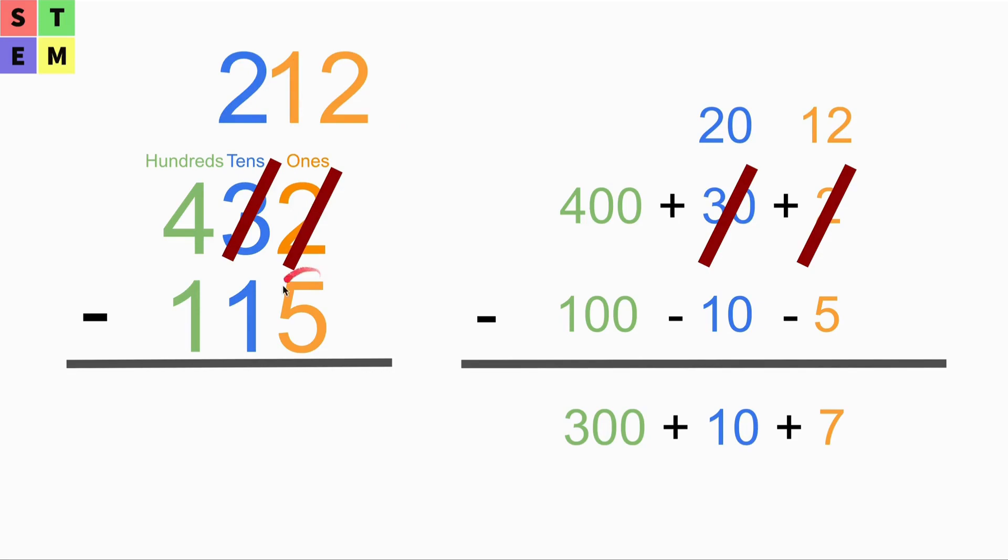Now we are going to use 12 minus 5, which is 7. We are going to use 2 minus 1, which is 1 at the tens place. And we are going to use 4 minus 1, which is 3 at the hundreds place. So in total we have 317.